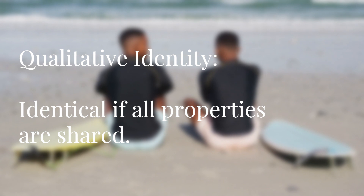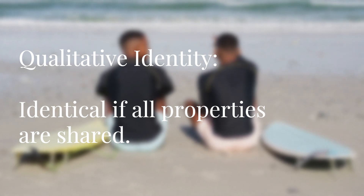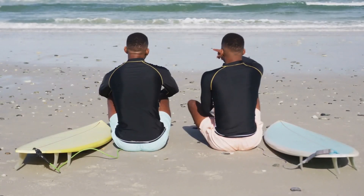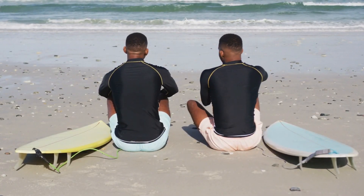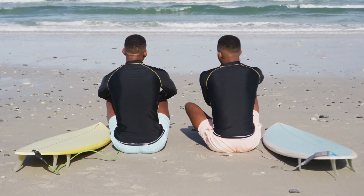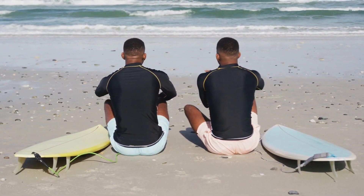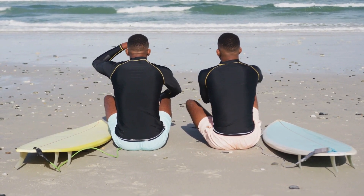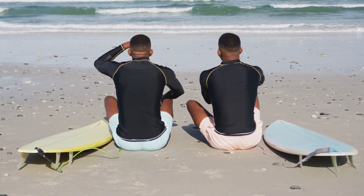An example of this would be if you suppose you meet identical twin brothers. Those brothers may be qualitatively identical in that they look the same way, maybe they have the same personality, whatever it may be. But each brother can only be numerically identical to himself.